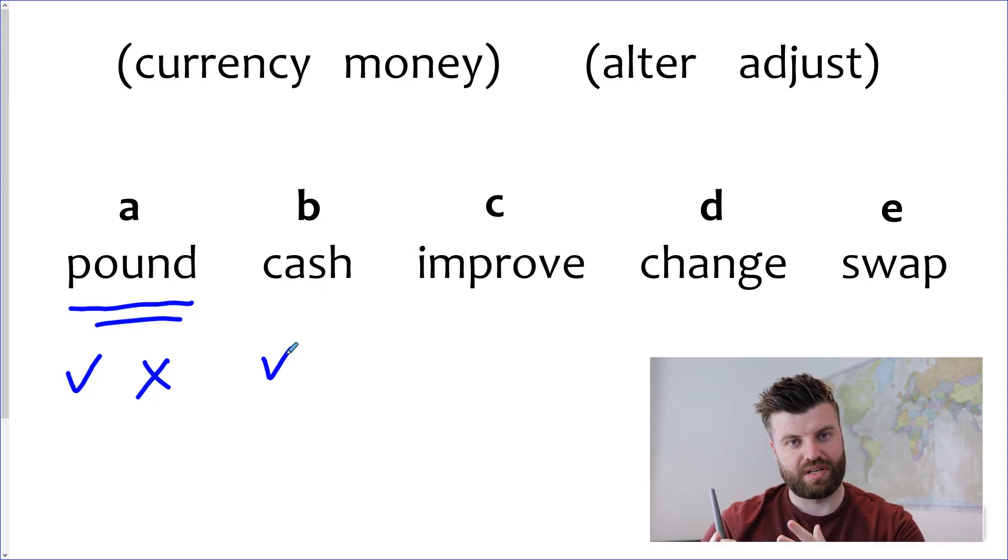So let's move on to the next one: cash. I can tell you straight away, cash obviously goes with currency and money, they're all linked together, they all mean pretty much the same thing, but does cash go with alter and adjust? No.